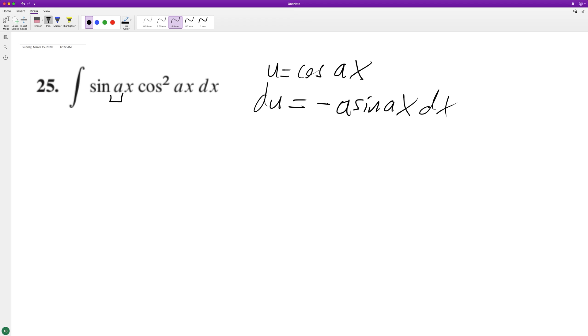Now we can substitute back in. To match our du and get the integral in terms of u, we need to multiply by a negative value. So we get negative integral of u squared du.